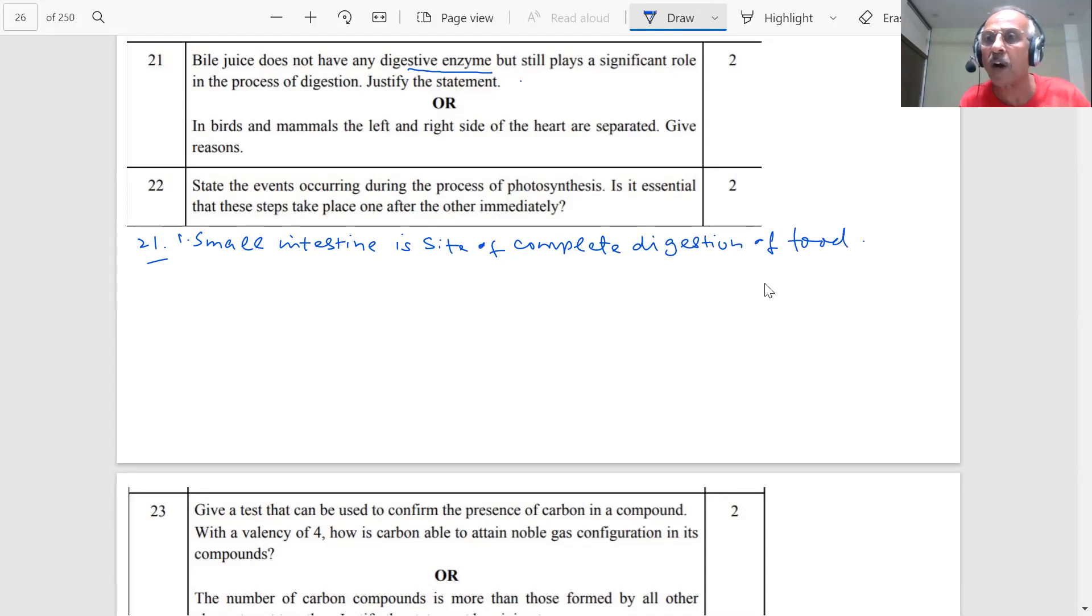The food which contains carbohydrates, fats, and proteins, coming from stomach, is acidic.